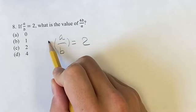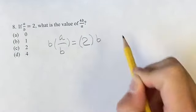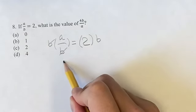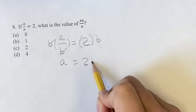So the first thing we can do is get rid of this fraction. By multiplying both sides by b, the denominator will be cancelled out and we're left with a is equal to 2b.